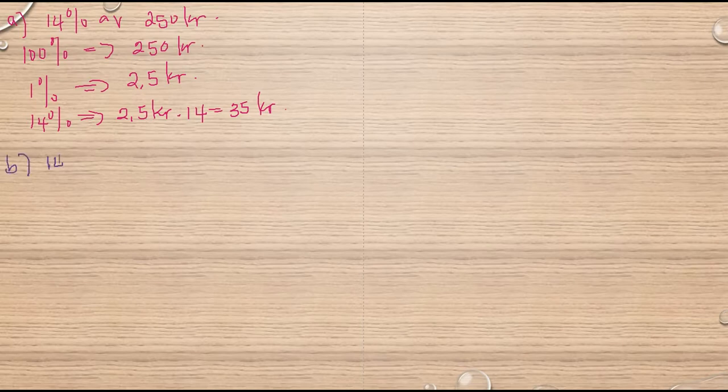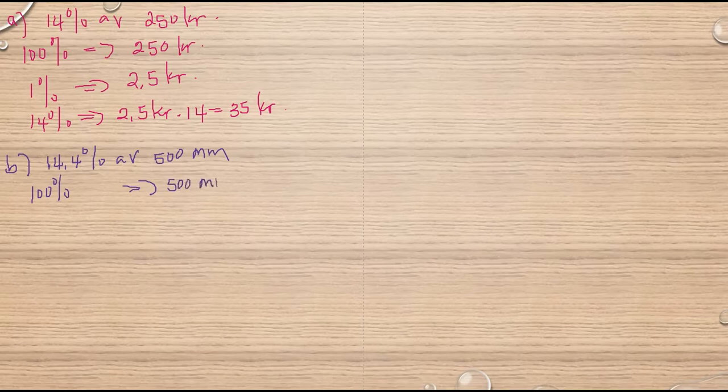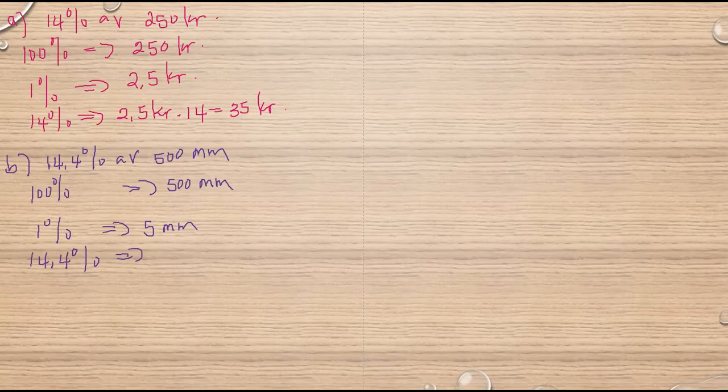Titta på andra B. 14.4% av 500 millimeter. Så har vi 100%, hela, motsvarar 500 millimeter. Och 1% motsvarar 5 millimeter. Så för att få 14.4% då multiplicerar vi 5 millimeter med 14.4. Så får vi 72 millimeter.